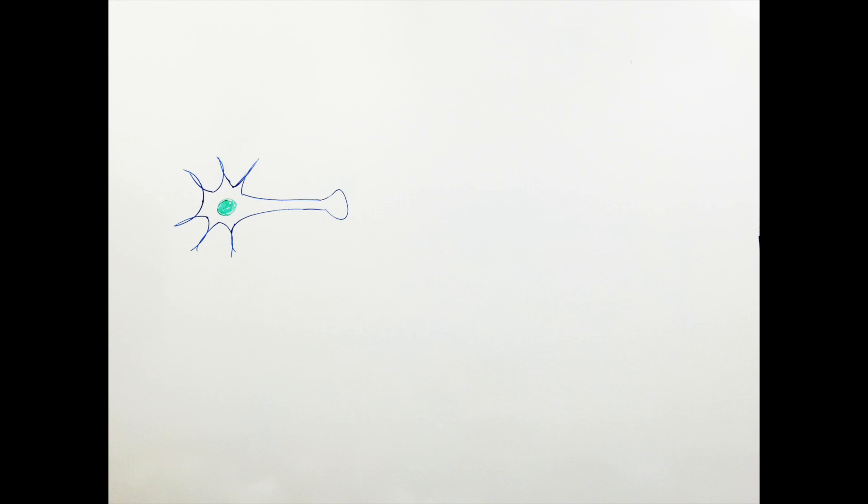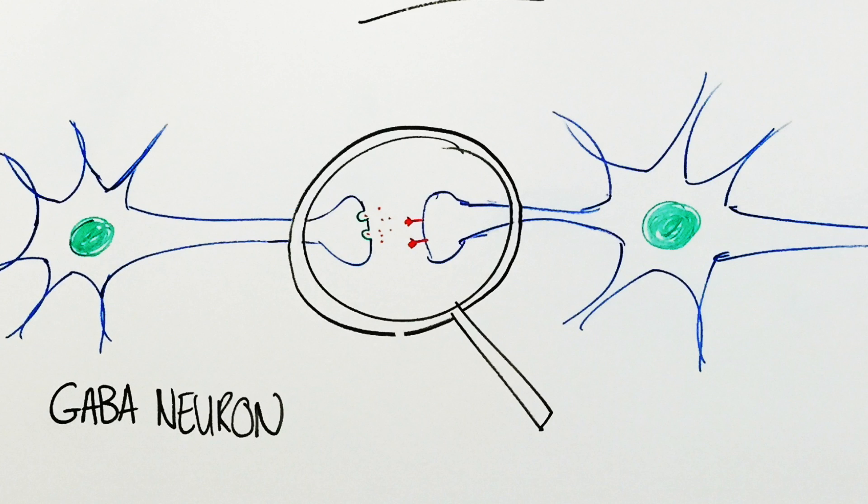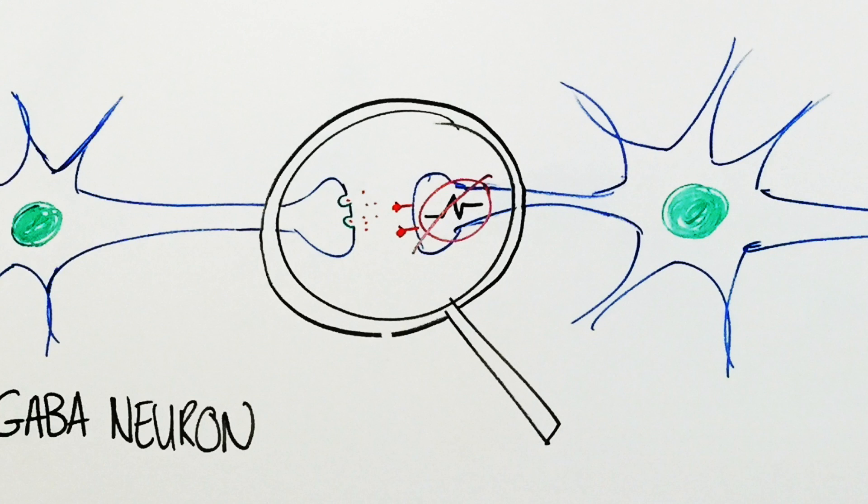An important part of the limbic loop is a GABA neuron located in the ventral tegmental area, which can be called VTA for short. This neuron normally releases an inhibitory neurotransmitter called GABA. If a neurotransmitter is inhibitory, it will prevent the next neuron in the pathway from producing a signal.